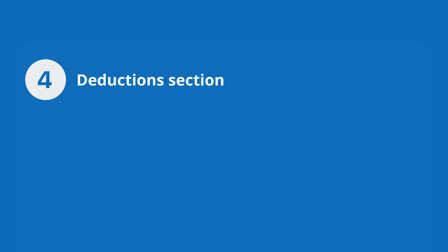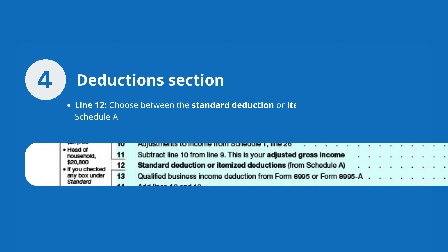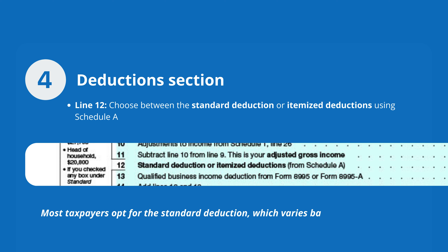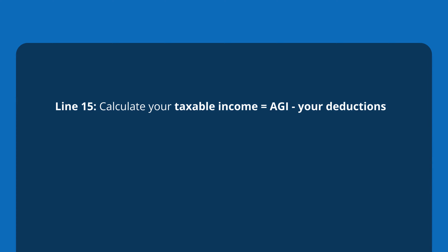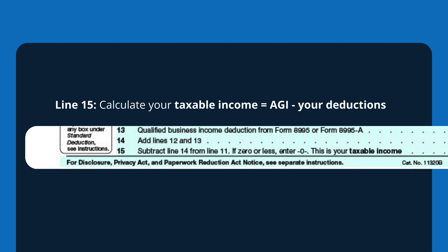Proceed to the deductions section. On line 12, choose between the standard deduction or itemized deductions using Schedule A. Most taxpayers opt for the standard deduction, which varies based on filing status. On line 15, calculate your taxable income by subtracting your deductions from your AGI.